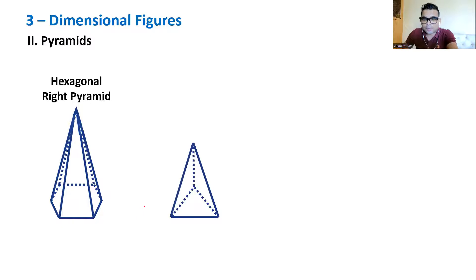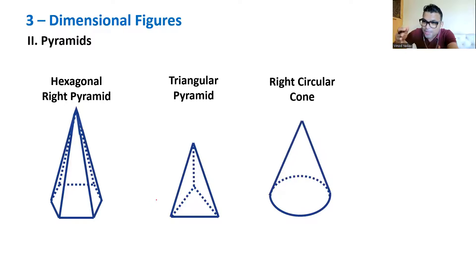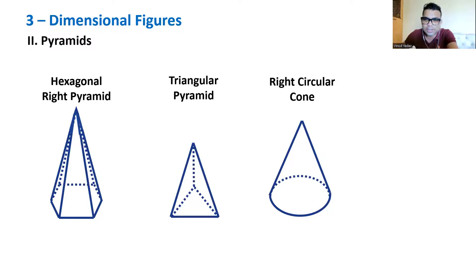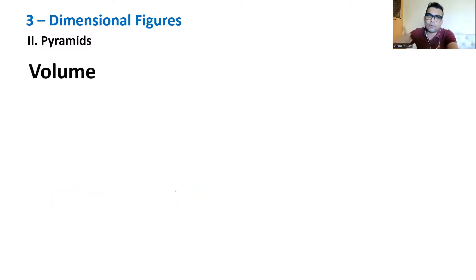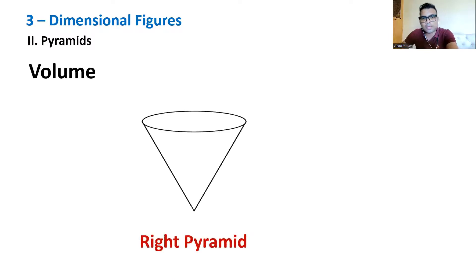A triangular right pyramid is also called a tetrahedron. A circular right pyramid is the very famous right circular cone — like an ice cream cone. Again, we need to find two things for pyramids: volume and surface area.